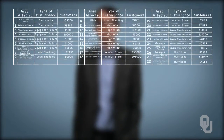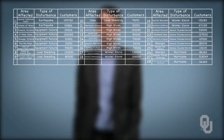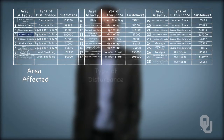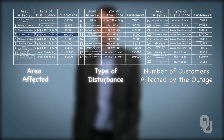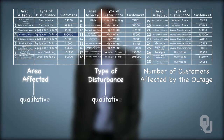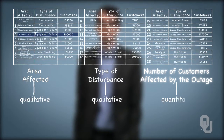Say we've collected a sample of electric power outage data maintained by the U.S. Energy Information Administration. We have a sample of size 28 with variables: area affected, type of disturbance, and number of customers affected by the outage. The area affected and type of disturbances are qualitative variables, while the number of customers is a continuous quantitative variable.